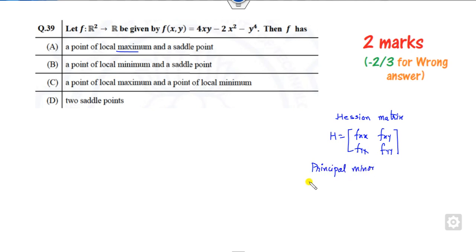The first principal minor is the first element, Fxx. Second principal minor is the determinant of this matrix, Fxx·Fyy minus Fyx squared. If D1 is less than zero and D2 is greater than zero, the point is maximum. If D1 is greater than zero and D2 is greater than zero, it's a minimum. All other cases are saddle points.